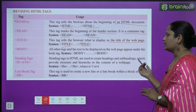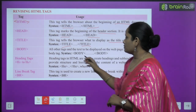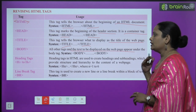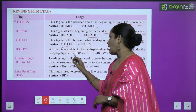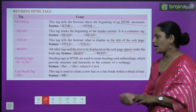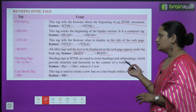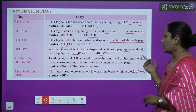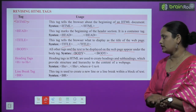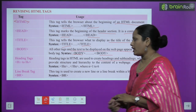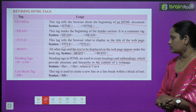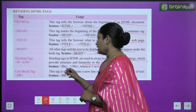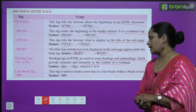After that comes the body tag. All other tags and the text to be displayed on the web page appear under the body tag. Whatever other tags there are, or whatever text we want to display on our website or web page, all of that comes inside the body. Next comes the heading tag, which goes from h1 to h6. Heading tags in HTML are used to create headings and subheadings, which provides structure and hierarchy to the content of the web page.